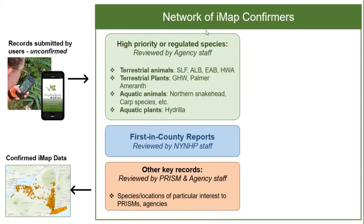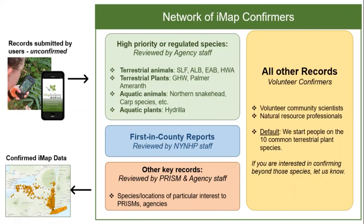It's really wonderful to have this network reviewing all the data, but it does not cover every single one of those 20,000+ records. So we also rely heavily on volunteer confirmers to help us keep up. I use the word 'volunteer' loosely — some are volunteer community scientists, but there are also natural resource professionals for whom confirming iMap data isn't part of their job but something they do because they have experience or want to help with invasive species efforts in the state. By default we start everyone on our list of 10 common terrestrial plant species.